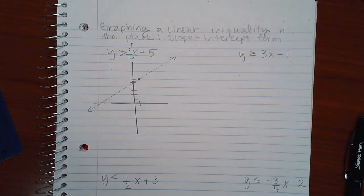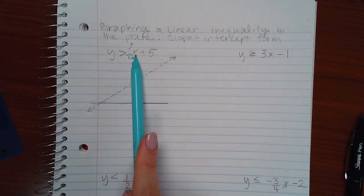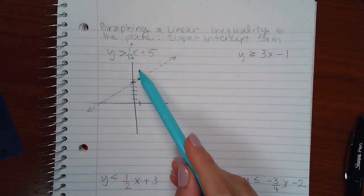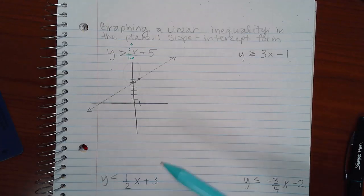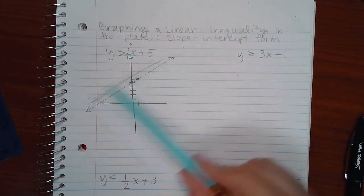Then, we need to shade. Now, here it says the y values are greater than this line. These y values are higher or greater than the line. Which means I should be shading this side of the line.